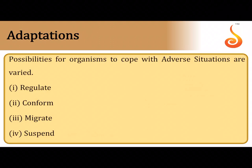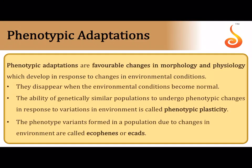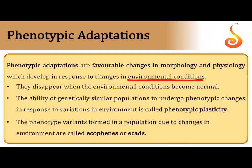Animals can adapt by regulating — maintaining a constant temperature irrespective of the surrounding environment. Fishes, amphibians, and reptiles cannot do this; they conform, meaning their body temperature follows the outside temperature. If conditions are beyond their limit of tolerance, they can migrate — leaving a hostile place for a less hostile one. Sometimes their metabolic activities slow down and they enter a state of suspension. Phenotypic adaptations may include changes in the shape or structure of the body (morphology) or functioning of the body.